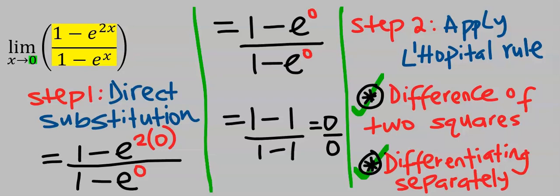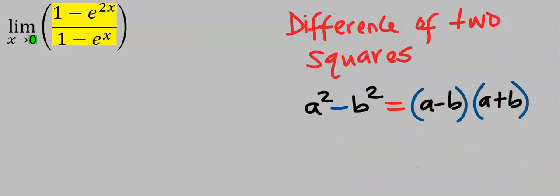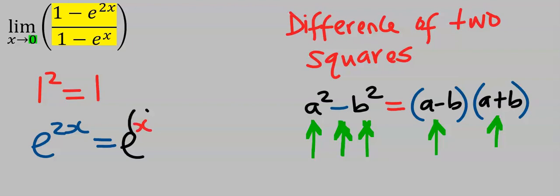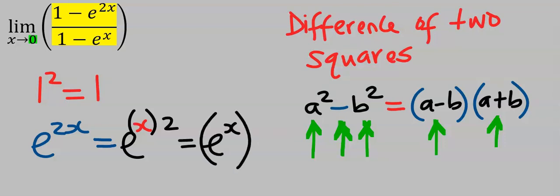Let's start with difference of two squares; later we'll use differentiation as an alternative method. The law governing difference of two squares is: a² minus b² equals (a − b)(a + b). Note that 1² is the same as 1, and e^(2x) is the same as (e^x)² — that is, e^x all squared.